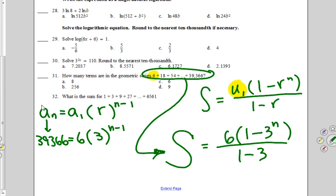Divide both sides by 6. Divide out the 6, you should get 6561. Right? You do okay there? Now, how do you solve for an exponent? You use a log.